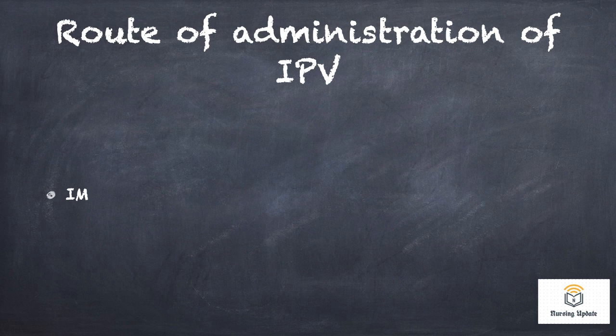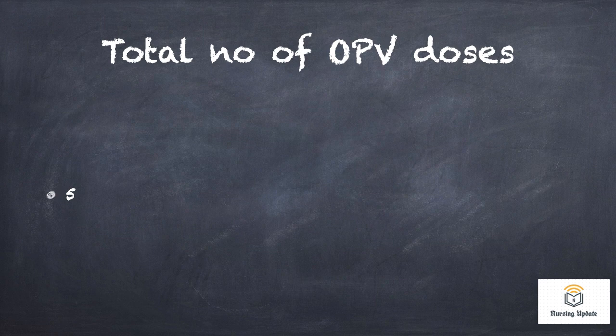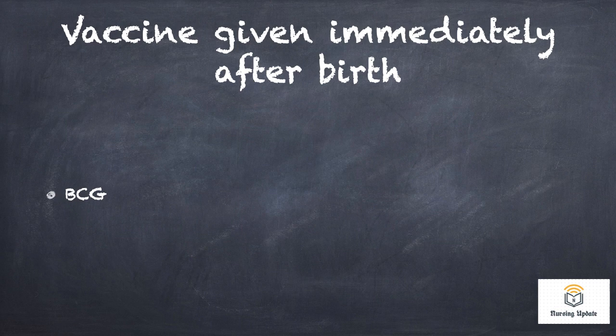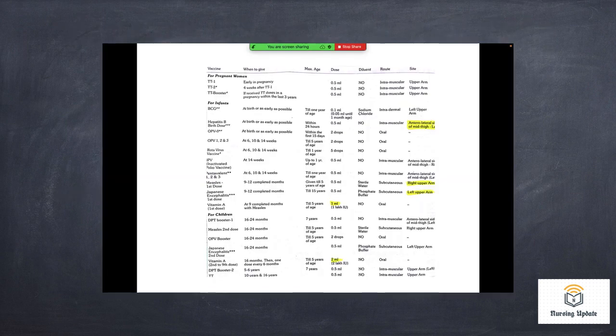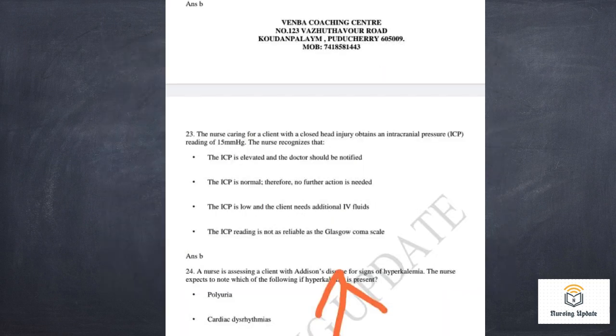Route of administration of IPV is IM. Then, total number of OPV doses — all covered in the notes. The first vaccine given immediately after birth: the answer is BCG. All of this is in the notes — screenshot shared.